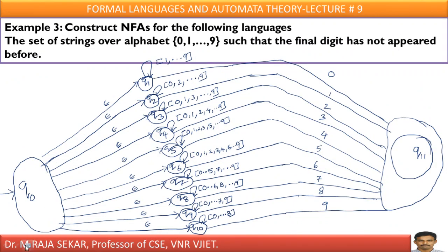What about the third example? Construct NFA for the following language: the set of strings over alphabet 0 to 9 such that the final digit has NOT appeared before. Final digit has not appeared means — here 0 is the final digit and it must not appear before, so I am keeping epsilon. In between also, 0 should not appear, so I am writing 1 to 9. Here the digit is 1 — this must not appear before, so I keep epsilon here. That 1 must not appear in between either, so I write 0 and 2 (skipping 1). For digit 2, I keep epsilon and write 0 and 1 (skipping 2). In that manner you can understand the other transitions.